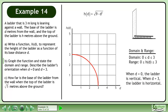When d equals 0, the ladder is vertical. When d equals 3, the ladder is horizontal.